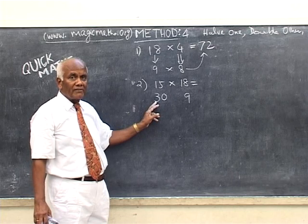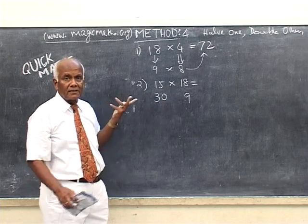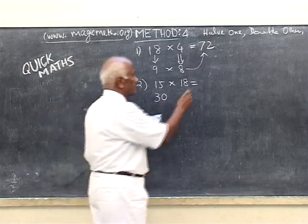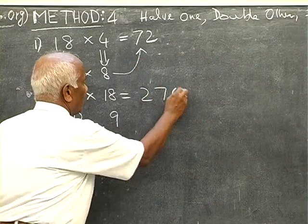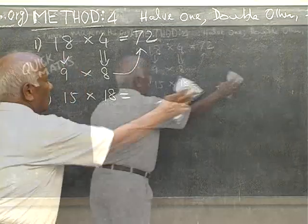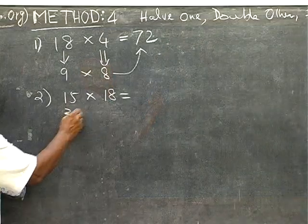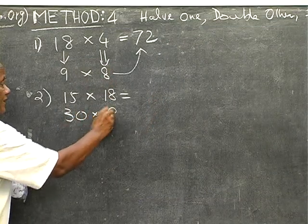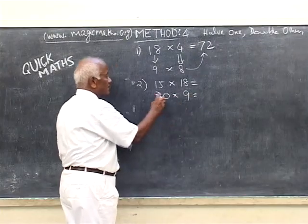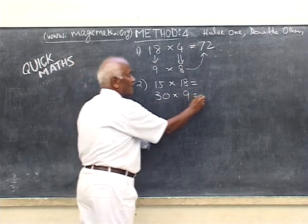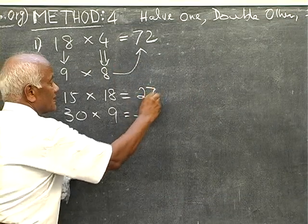Now look at this, 9, 3 is 27, put a 0, that is the answer. You can do all this mentally, 270. I shall repeat it once more. 15 double it, 30, 18 half it, 9. So the answer is 9, 3 is 27. So 270.